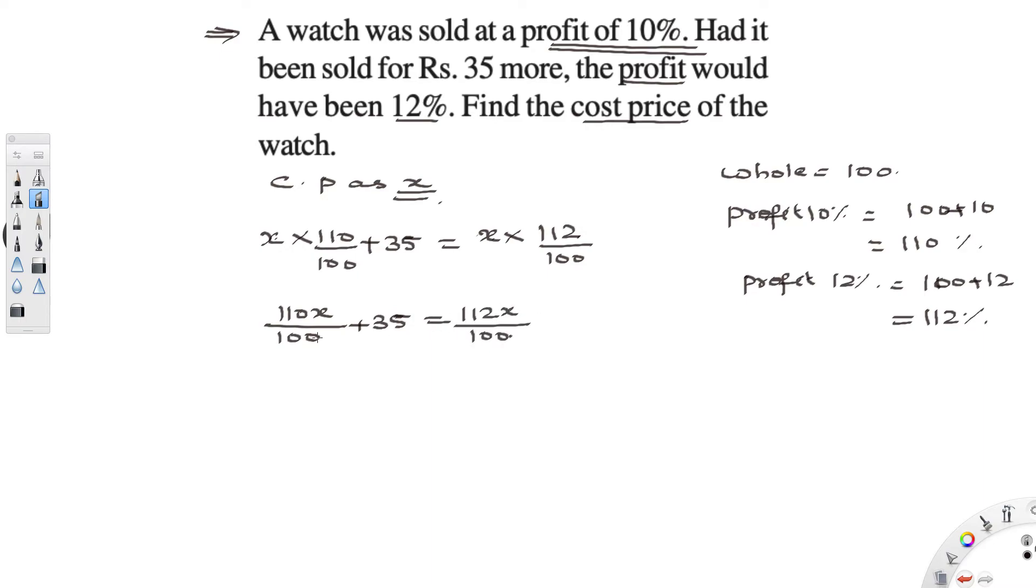Now I need to take LCM here. So when I take LCM here, here it is 1. So the LCM is 100. So 110x plus 35 into 100 is 3500 by 100 equal to 112x by 100.